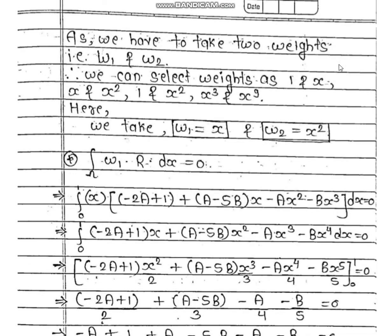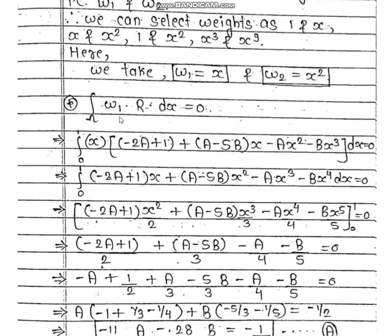We now solve in two parts, requiring two weight functions. In the Petrov-Galerkin method, weight functions can be chosen as 1 and x, or x and x², etc. Here we take weight function w1 = x and weight function w2 = x².